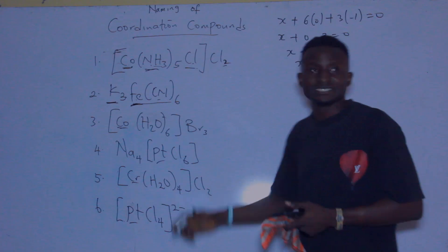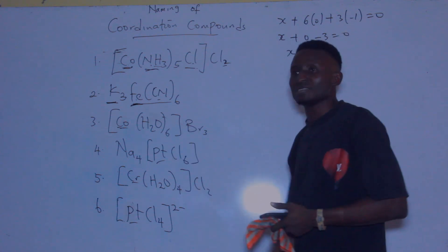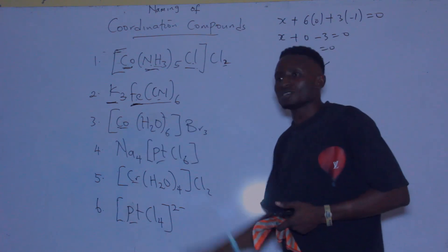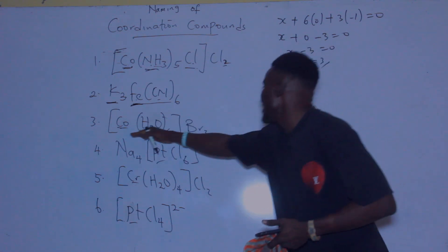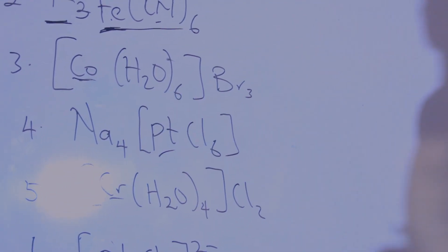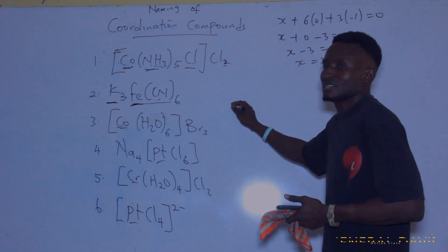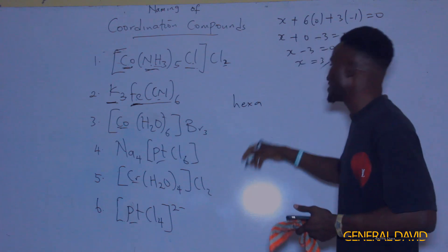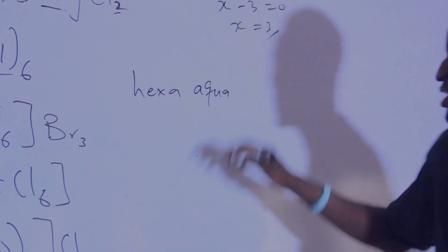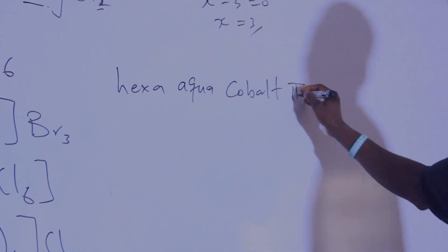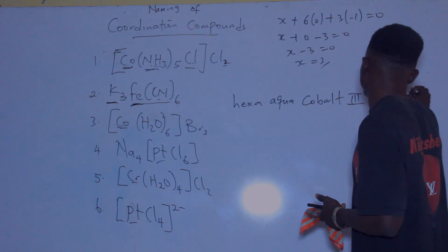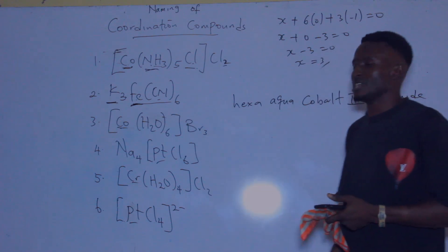We have cations and anions, so we name the cations first. There are six water ligands — water is named aqua, and six gives hexa — so hexaaqua. The central atom is cobalt with oxidation number three — cobalt(III). The anion outside is bromide. The full name is hexaaquacobalt(III) bromide.